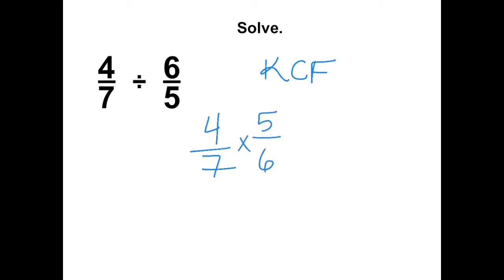Check for any cross-simplifying. 4 and 6 can both be divided by 2. This becomes 2. This becomes 3. Now we can multiply.